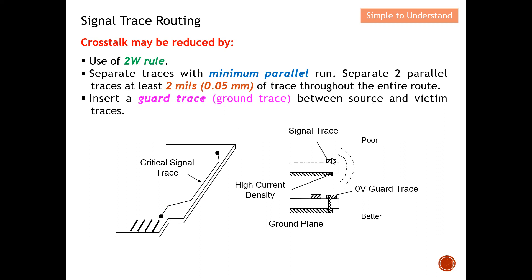We also don't want to put our signal traces at the edge of the PCB, as this can cause potential EMI radiation. If we add a guard trace — which is connected to ground — when coupling happens, it couples to the ground rather than radiating out. The coupling will be shunted to ground, minimizing radiated EMI. Without a ground trace, the signal couples directly outward and becomes a radiation source, which may cause EMI issues.